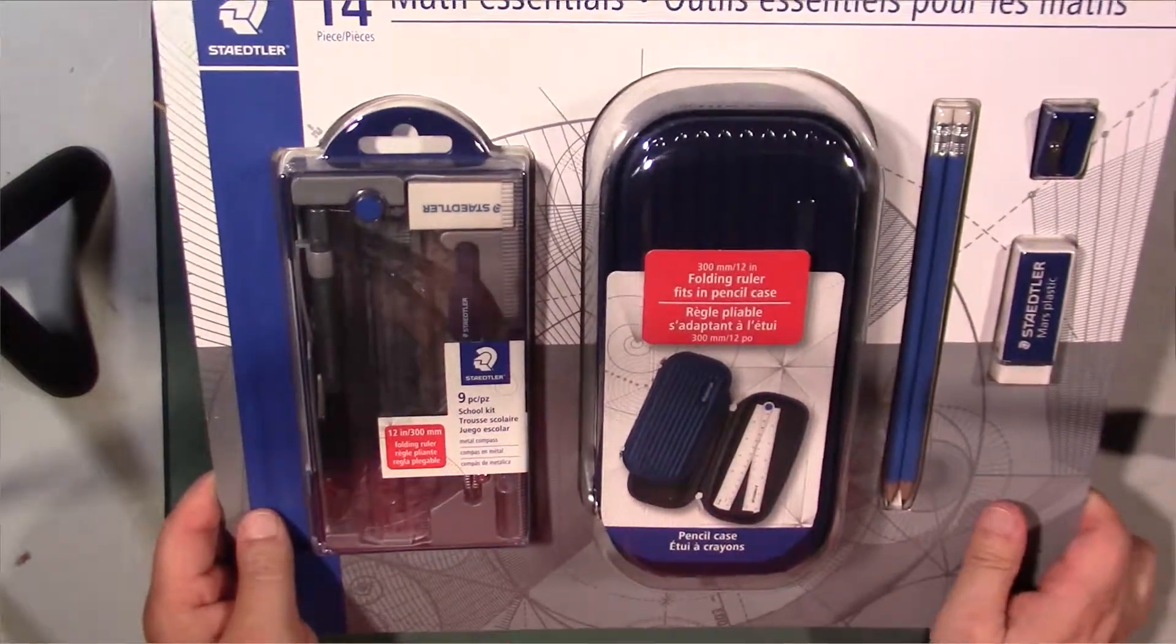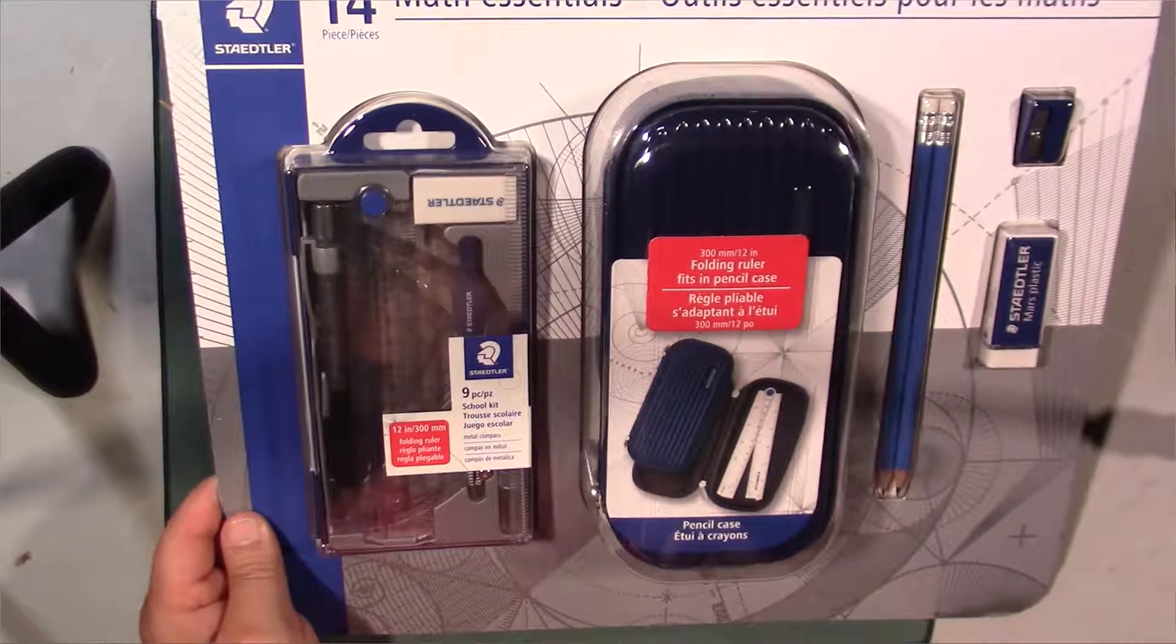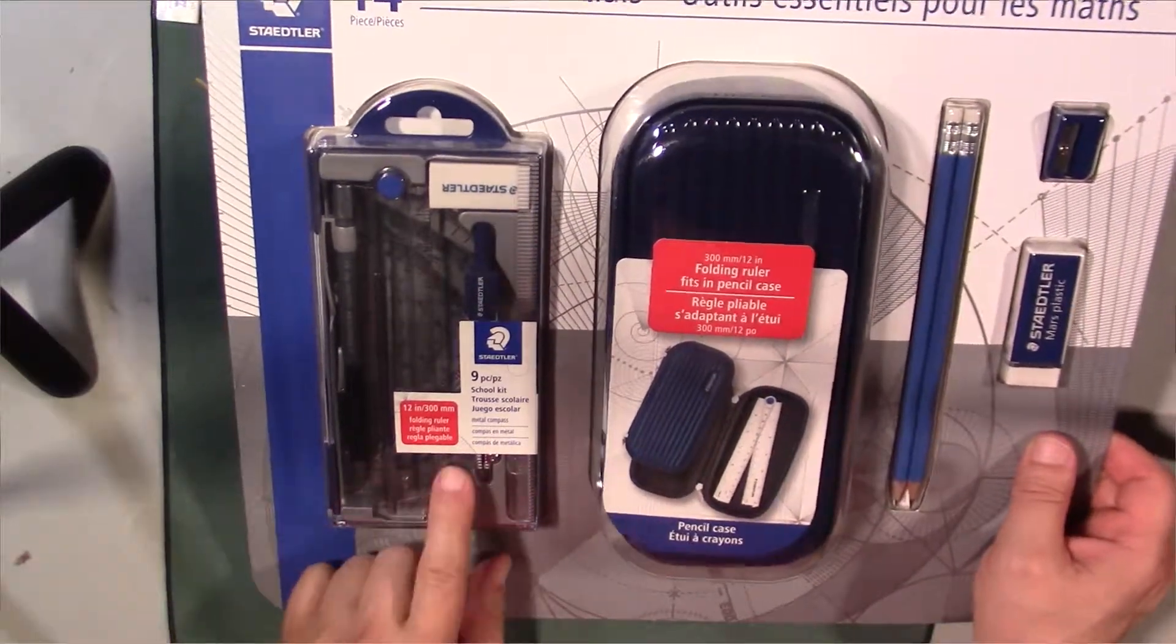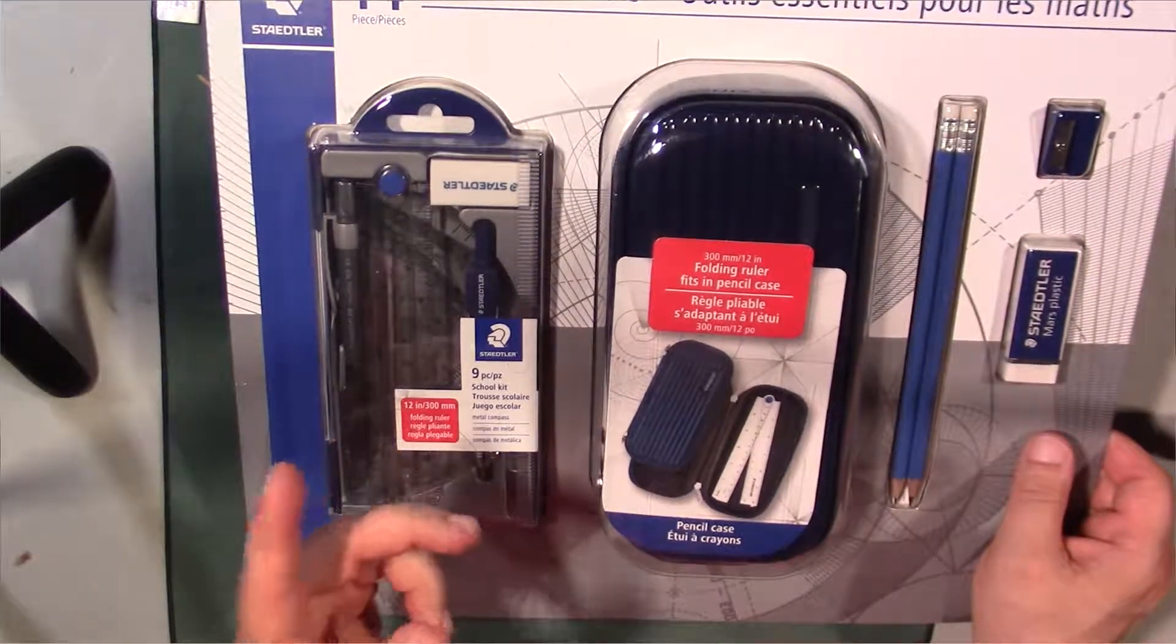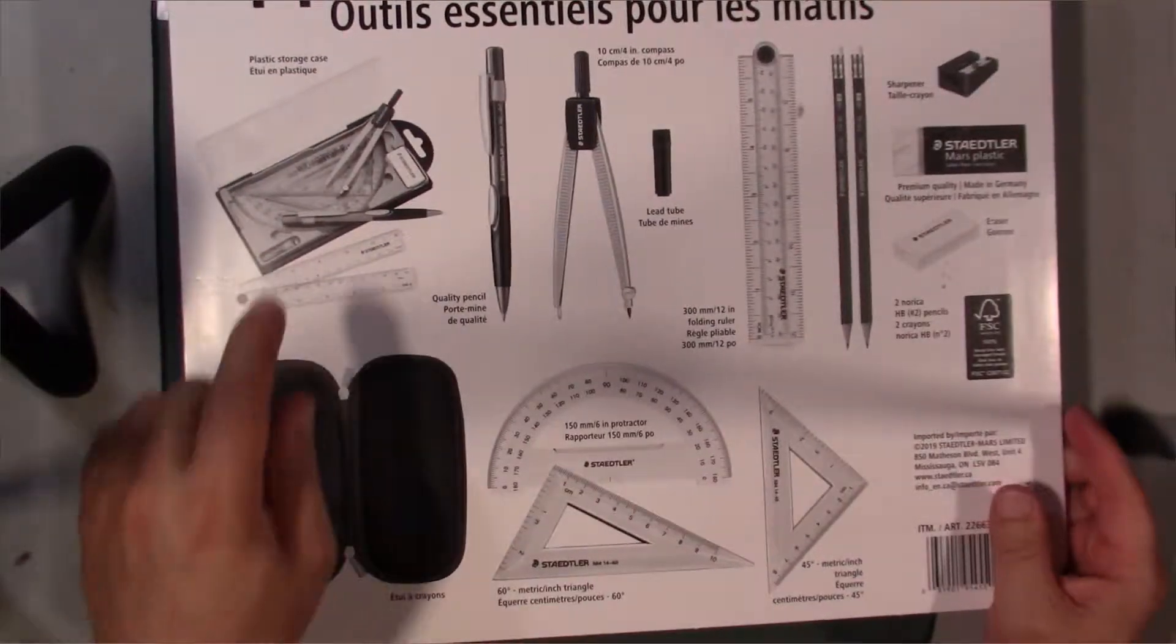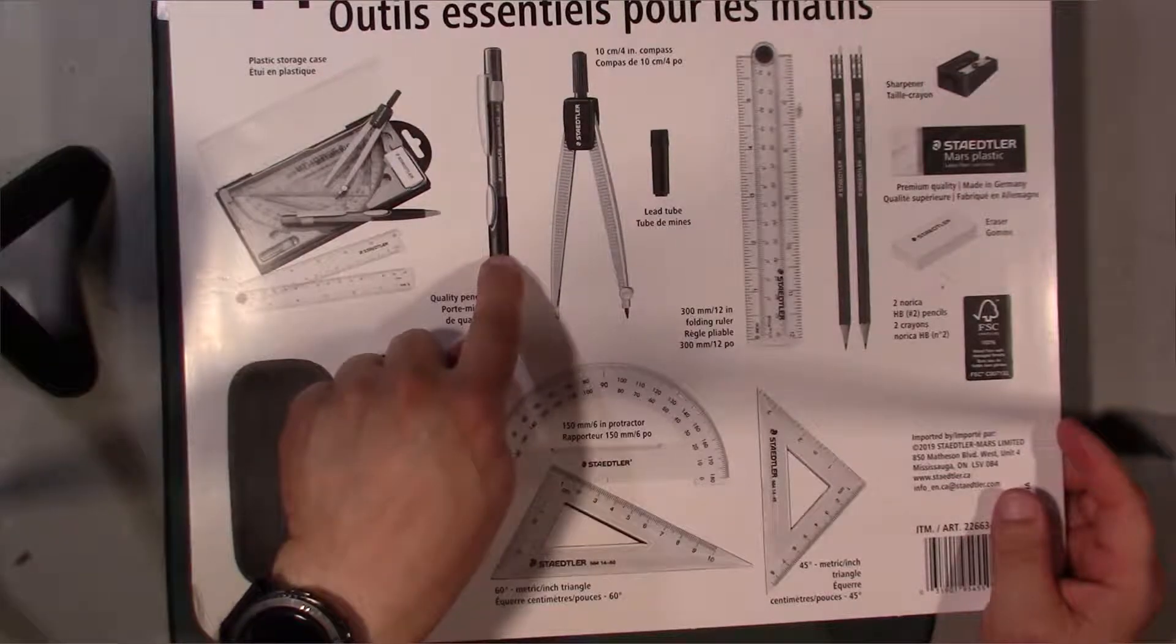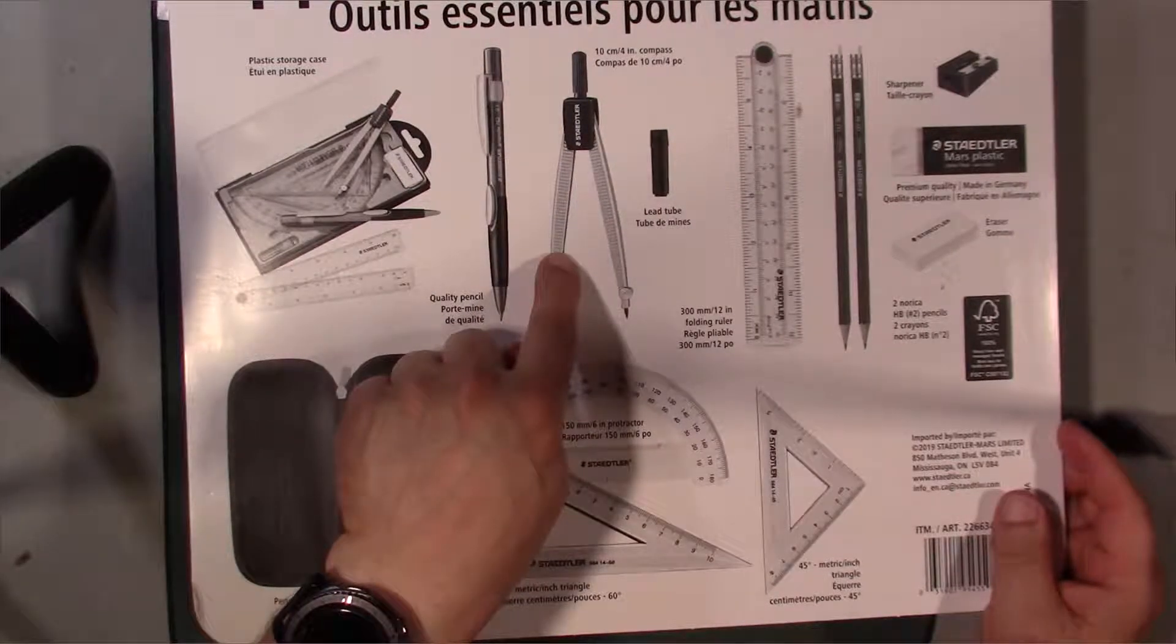It's from Staedtler, so of course you got a metal compass in here with ruler, protractor, mechanical pencil, and whatnot. On the back here, it's actually got the case, you got a pencil case along with it, you got the mechanical pencil.